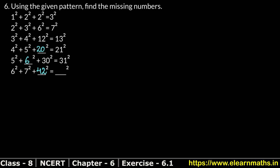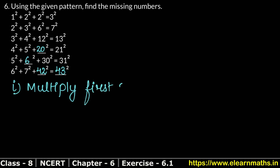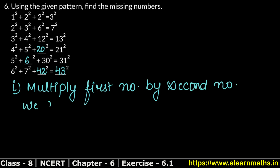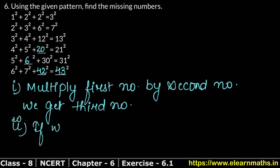So the full pattern for the right-hand side is: 3, 7, 13, 21, 31, 43 — each obtained by adding 1 to the product. In the first step, we multiplied the first number by the second to get the third number. In the second step, if we add 1 to the third number, we get the fourth number.